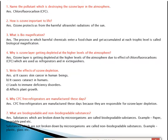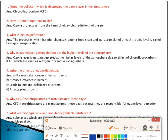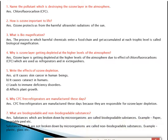The first question: name the pollutant which is destroying the ozone layer in the atmosphere. The answer is chlorofluorocarbon, short form CFC. You should remember the full form — chlorofluorocarbon. It is a chemical used in refrigerators and fire extinguishers which is destroying the ozone layer in the atmosphere.